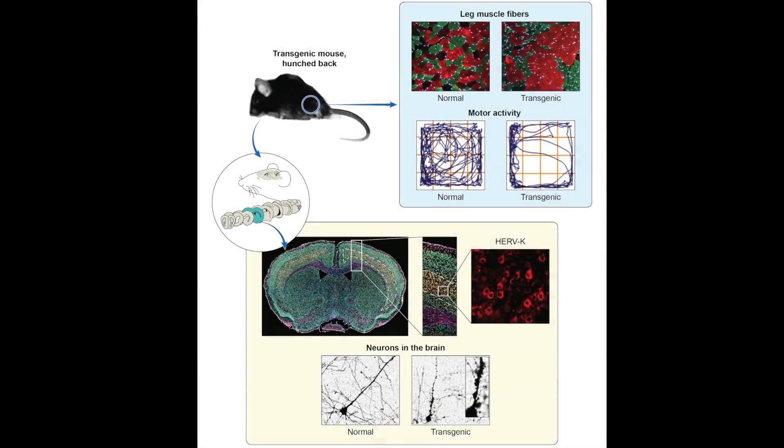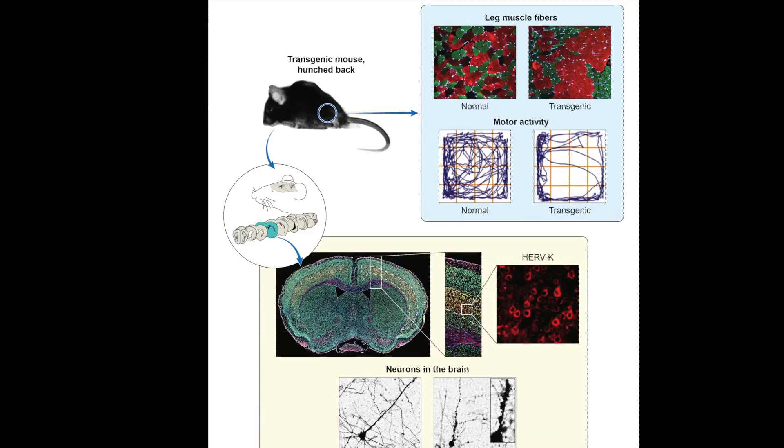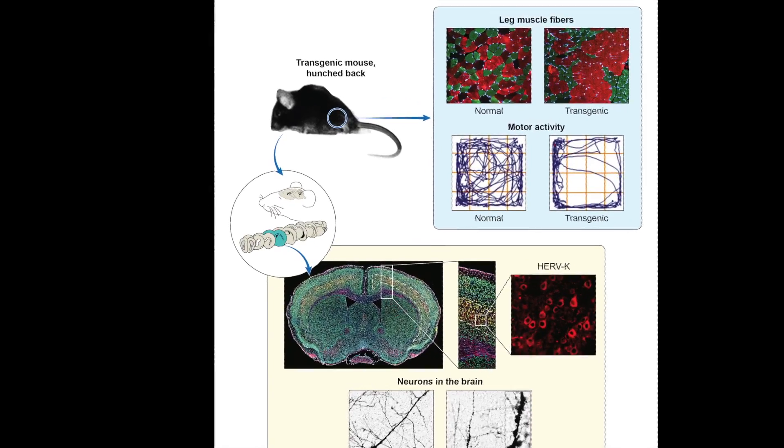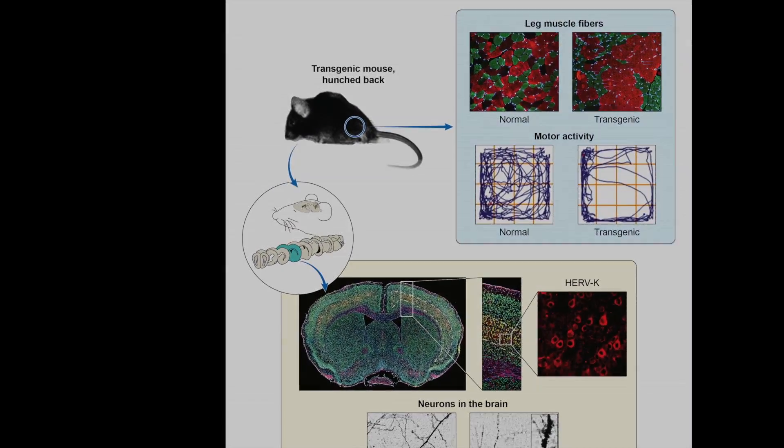We took the gene of that virus and put it in mice, and we found that those mice developed symptoms of ALS. They had difficulty walking, and as these mice aged, they had more and more symptoms develop.